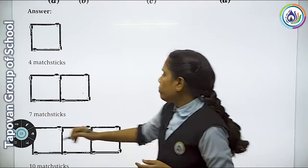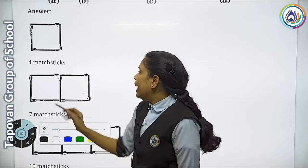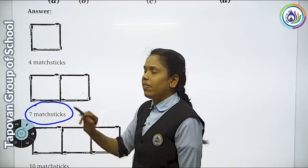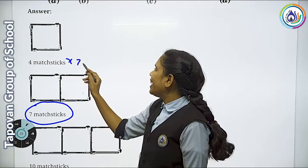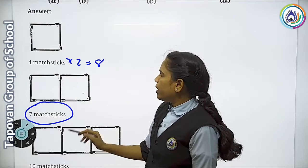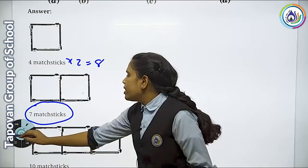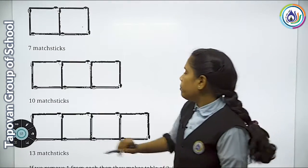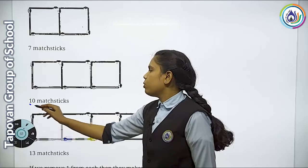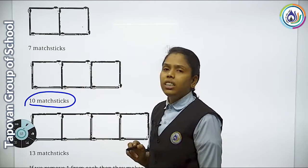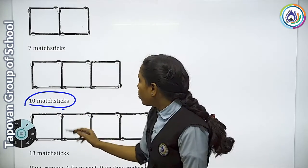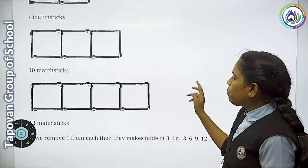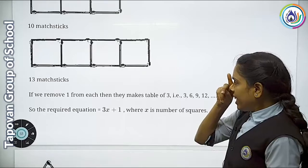If you have 1 square, you need 4 matchsticks. If you make 2 squares, you need 7 matchsticks — not 8, because they share one side. If you make 3 squares, you would expect 12 but actually need 10 matchsticks. With 4 squares, you need 13 matchsticks. So this is the pattern.